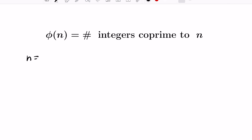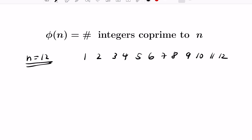We can get an example of what this looks like by looking at a particular value of n. Let's look at n equals 12. We'll list all the positive integers from 1 to 12 inclusive, and then exclude the ones that have a common factor with 12 besides the factor 1. For example, we can get rid of all the even numbers because they all have a common factor of 2 with 12.